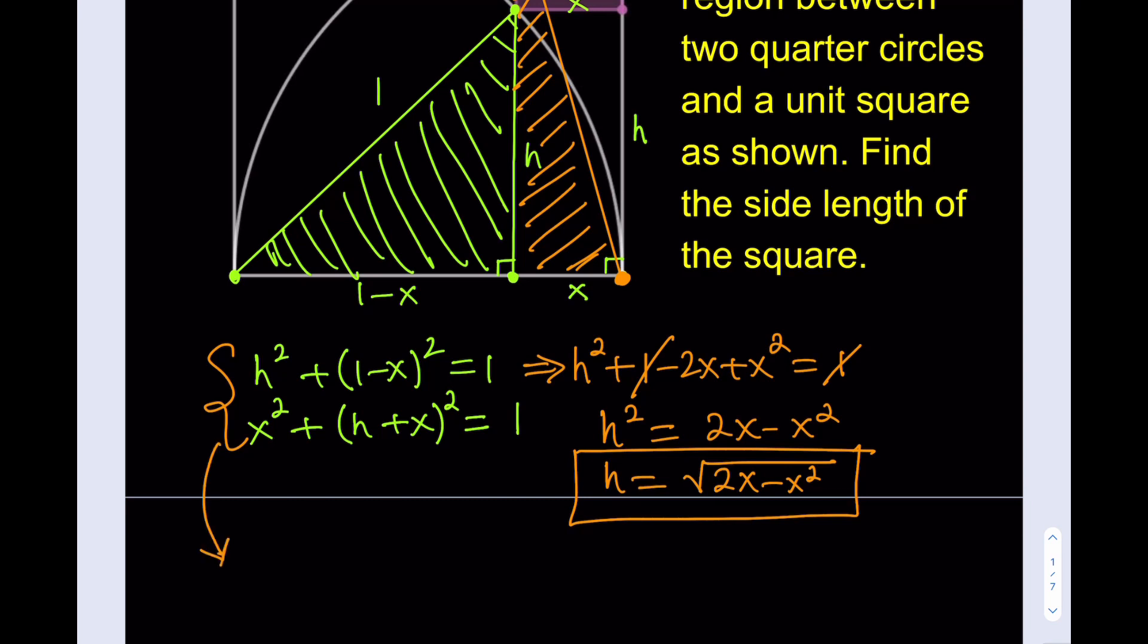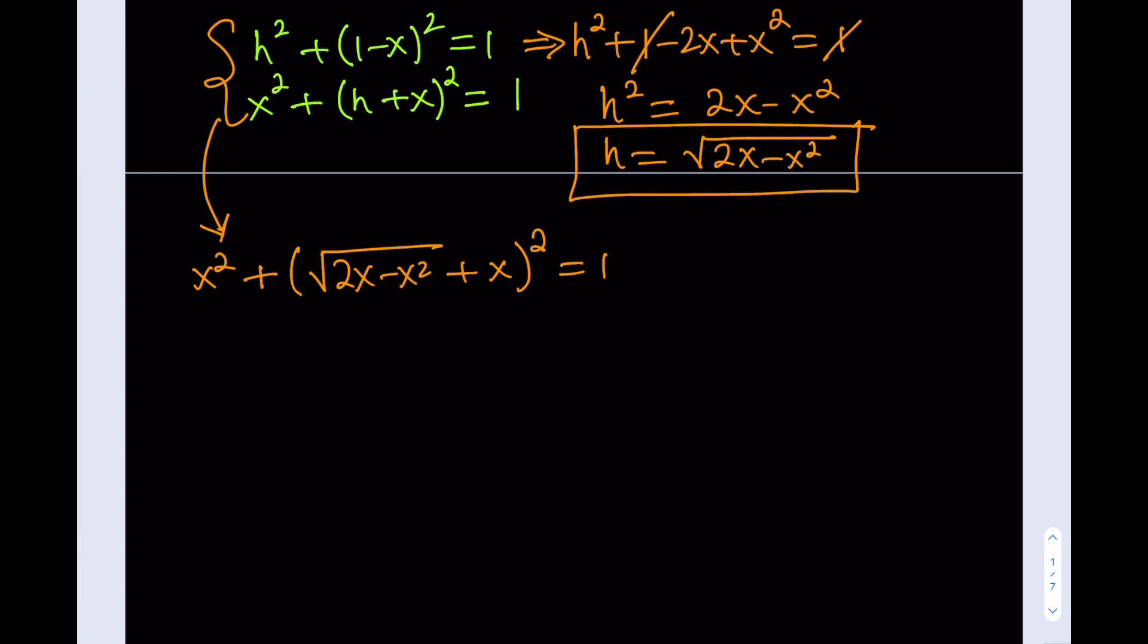So, when I substitute that into the second equation, I have x squared plus h. So, that's going to be the square root of 2x minus x squared. That is just h, plus x. And then, quantity squared is equal to 1. So, now, I end up with a single variable and I'm trying to solve for x. So, things look good. But we have some radicals we need to get rid of. Not only that, we also need to square this expression.